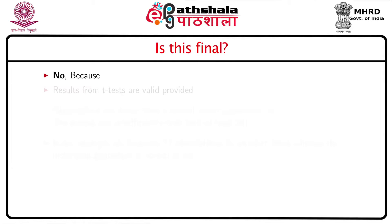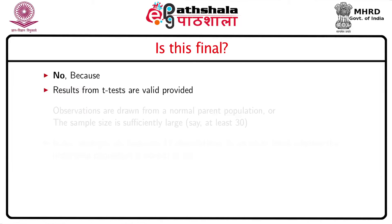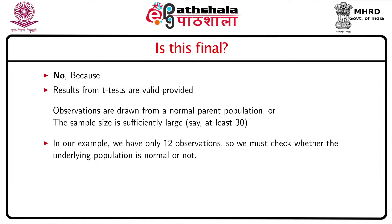But this final conclusion is not validated because we are using a t-test, and the t-test is a parametric test based on specific assumptions. In fact, t-tests are valid provided the observations are drawn from a normal parent population, or the sample size is sufficiently large — say at least 30. In our example, we have only 12 observations.